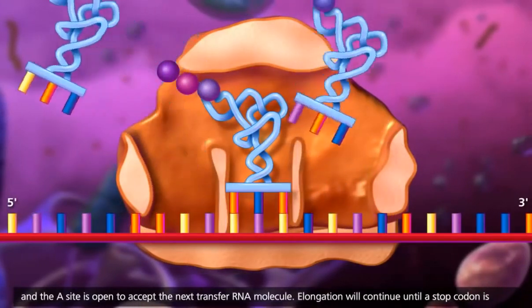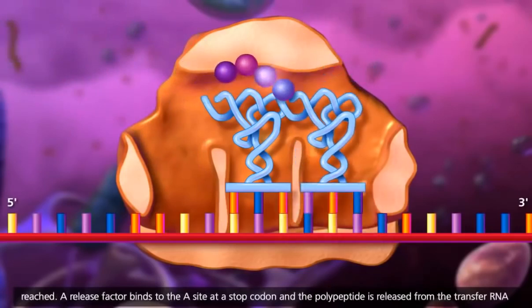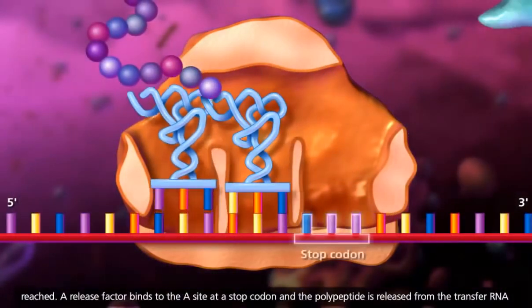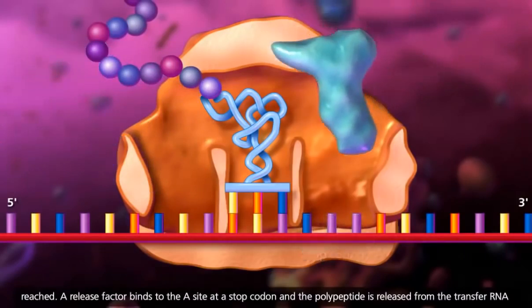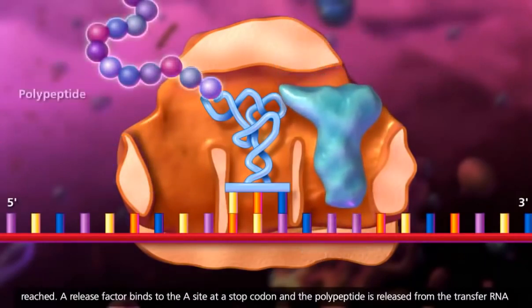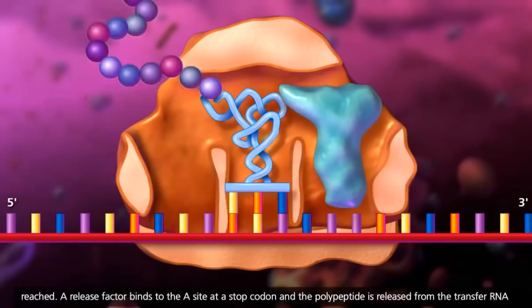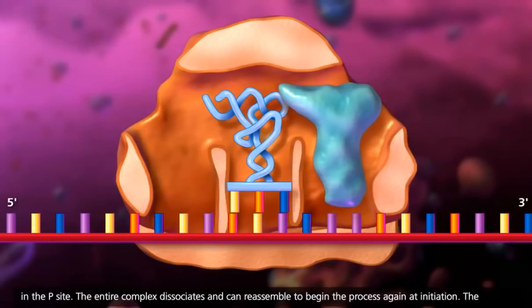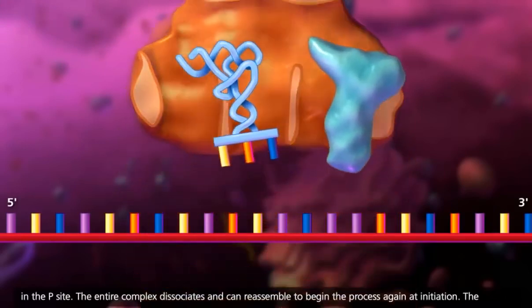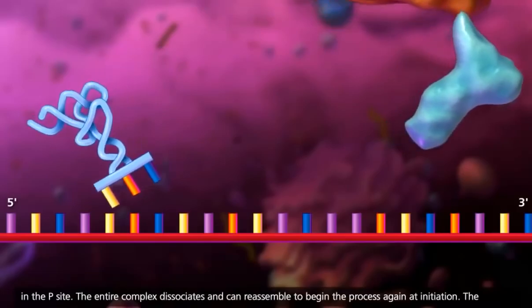Elongation will continue until a stop codon is reached. A release factor binds to the A site at a stop codon and the polypeptide is released from the transfer RNA in the P site. The entire complex dissociates and can reassemble to begin the process again at initiation.